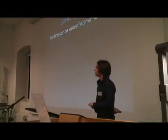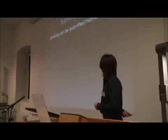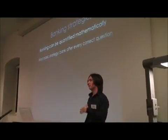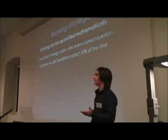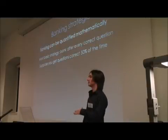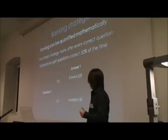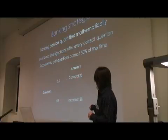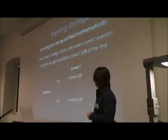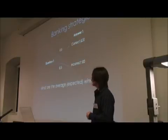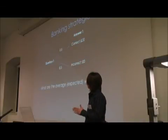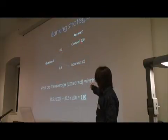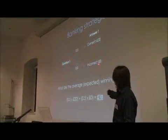Banking strategies are where we can quantify things mathematically, and you can actually bank optimally. The most basic strategy is to bank after every correct question, putting £20 into the prize pool each time. Suppose you get questions correct 50% of the time. Using a decision tree for one question: there's a 50% chance of getting it correct, earning £20, and 50% chance of getting it wrong, earning £0. The expected winnings are 0.5 × £20 + 0.5 × £0 = £10.